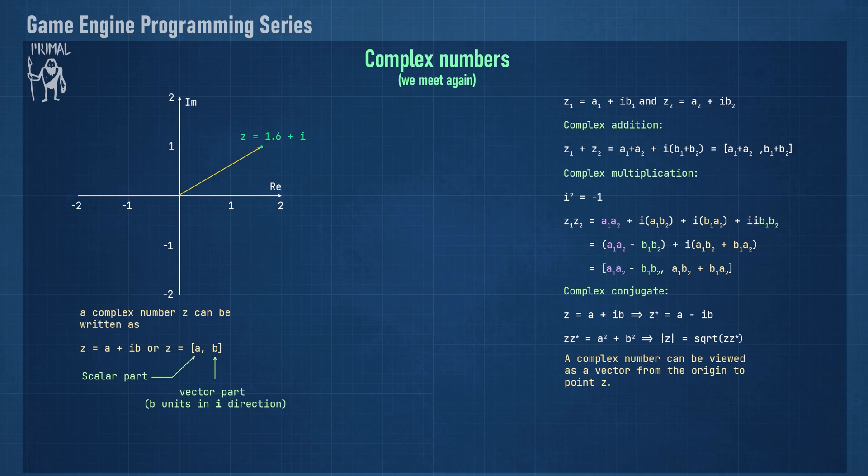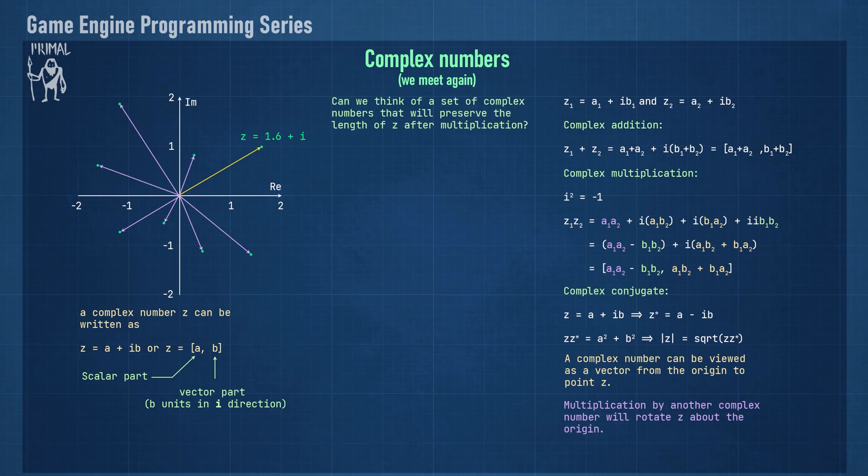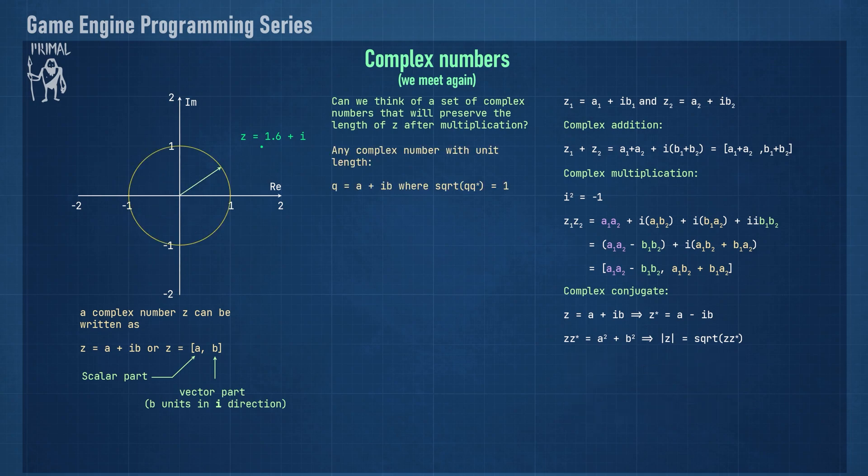When we multiply a complex number by another complex number, we'll always get a number that's also on the complex plane. Although the length of the resulting vector can vary, it's easy to see that multiplying is the same as rotating the vector about the origin. So can we think of a set of complex numbers that will preserve the length of our vector after multiplication? Well, of course we can. Any complex number with unit length will not change the magnitude of the original vector.